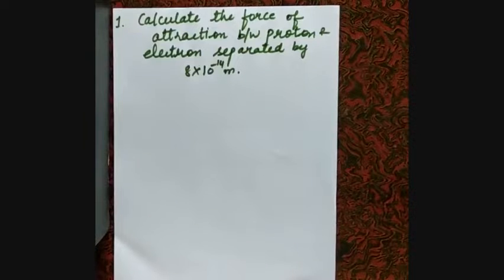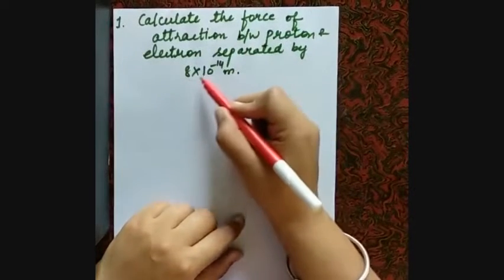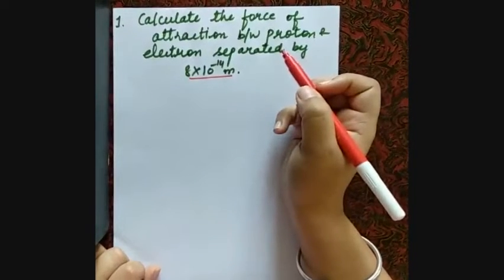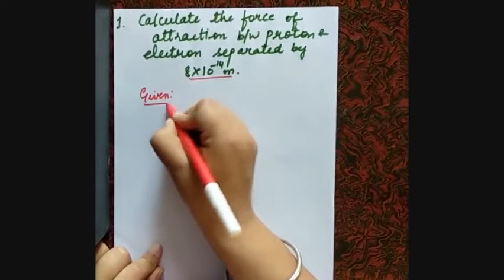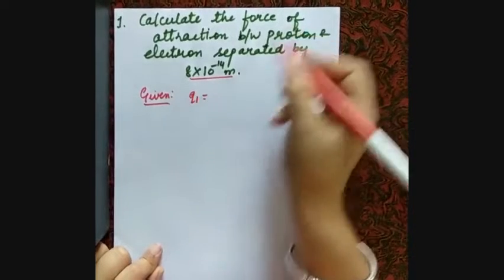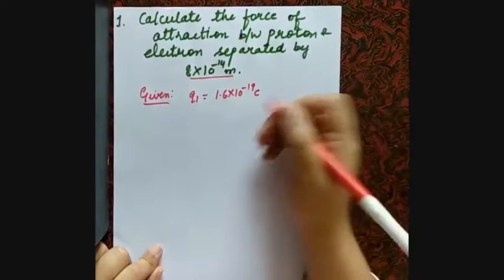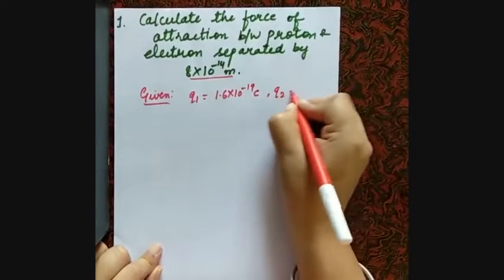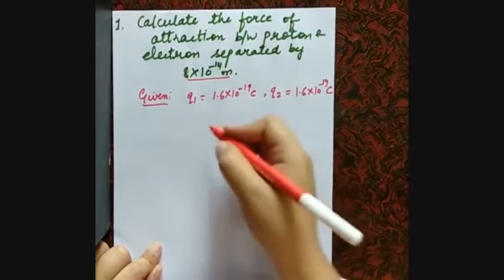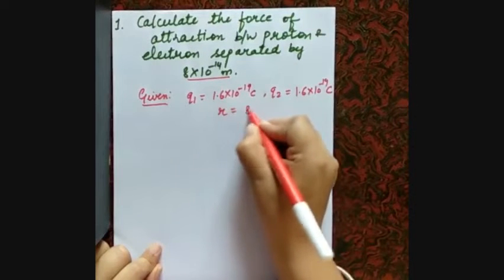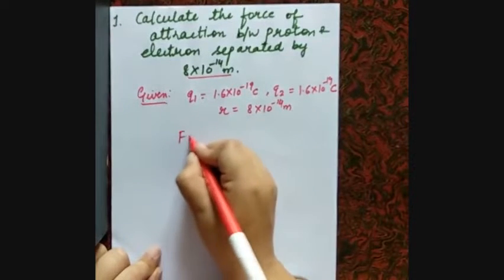In this first numerical, we have a proton and electron separated by a distance of 8×10⁻¹⁴ meters. Given: Q1, the charge of a proton, is 1.6×10⁻¹⁹ coulombs. Q2, the charge of the electron, is also 1.6×10⁻¹⁹ coulombs. The distance r is given as 8×10⁻¹⁴ meters. We need to calculate the force of attraction F.